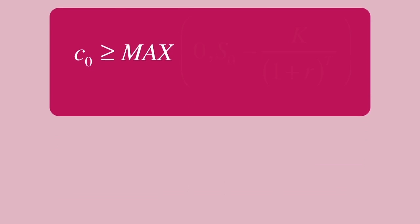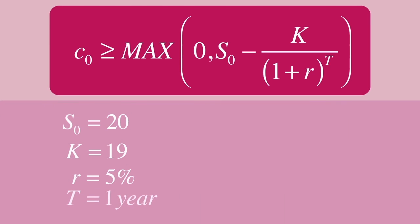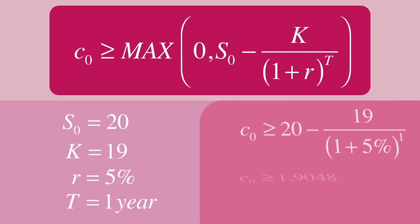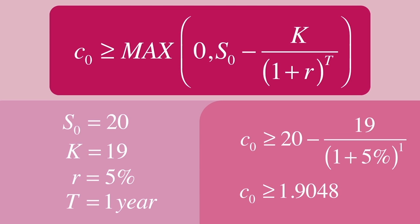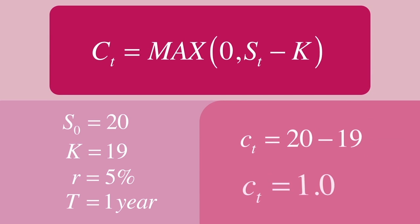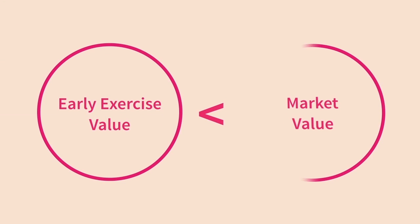As an example: a call option where the underlying stock price is 20 euro, the strike is 19, the discount rate is 5%, and time to expiry is 1 year. The value of the option at this point would be 20 minus 19 divided by 1.05, which is approximately 1.9048. But if this were an American option and we exercised today, the exercise value would simply be 20 minus 19, or 1.0 — less than its market value. So early exercise of an American call option will generally yield a lower return.